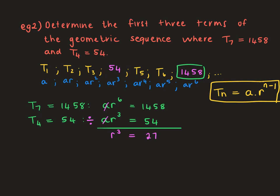In the previous example with arithmetic sequences, we made A the subject and equated the two equations to solve for D, then found A. In the geometric sequence, we divide the two equations to solve for R. Now that R cubed equals 27, we cube root both sides. The cube root of 27 is 3, so R equals 3.